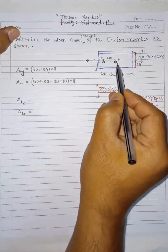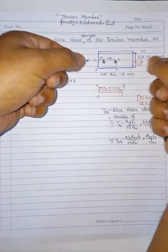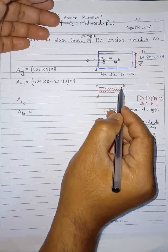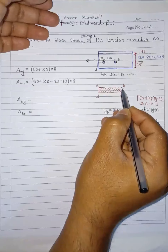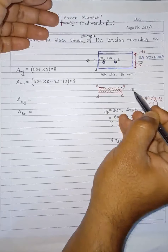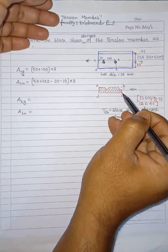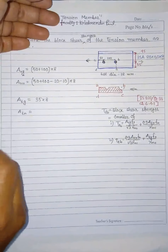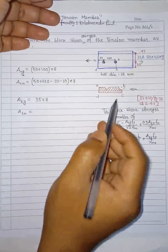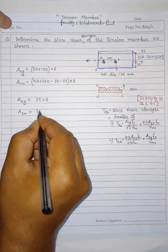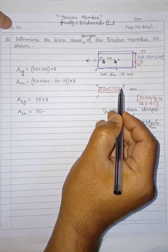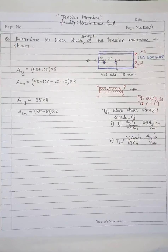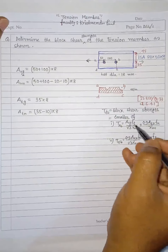The BC line is subjected to tension when the force is applied. For Atg (gross tension area), from this point to this point it is 35 mm, so Atg = 35 × 8 = 280 mm². For Atn (net tension area), we deduct half the hole diameter: Atn = (35 − 10) × 8 = 200 mm².